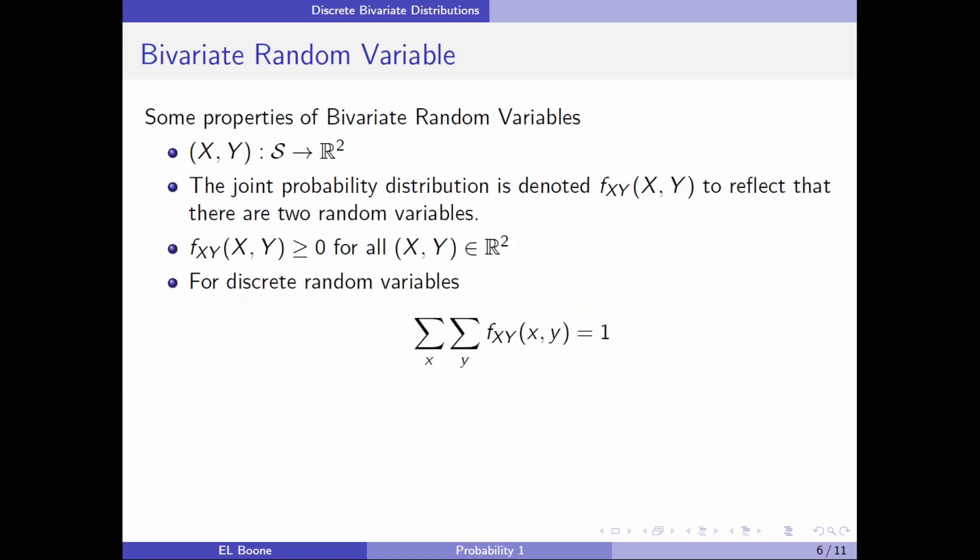Some properties of bivariate random variables: (X, Y) is going to be a function that goes from our sample space to R², the real plane—the XY plane. It's called a joint probability distribution, and we're going to denote it with f_XY to show which variables this thing is going to have. You'll want this later because there's going to be lots of f's floating around. X and Y are the inputs. This is going to require that this function is greater than or equal to zero for all (x, y) in the real plane.